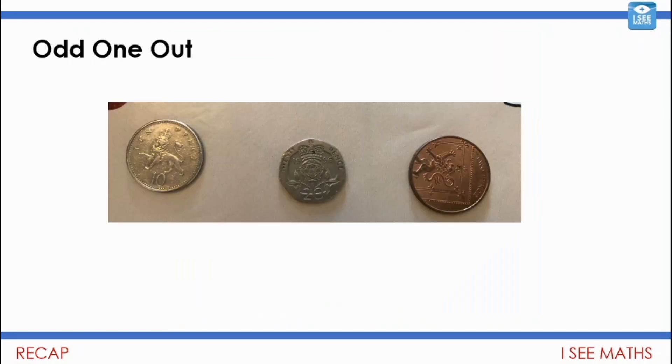But we also had these amazing odd one out examples sent through. I'd never thought of examples like these. So have a look at this one. Why could each coin be the odd one out? Pause the video.